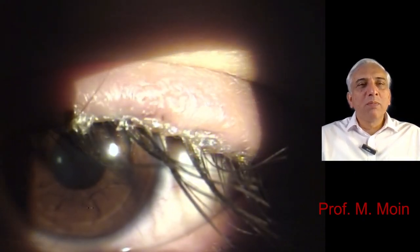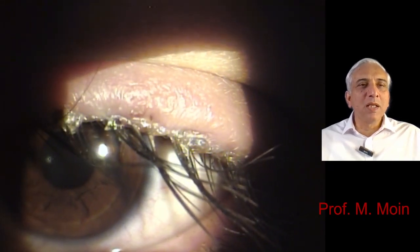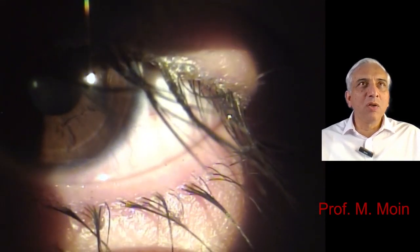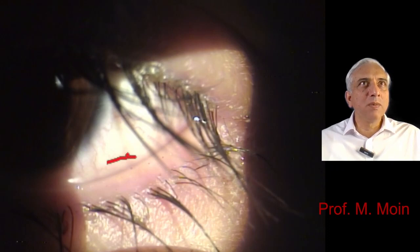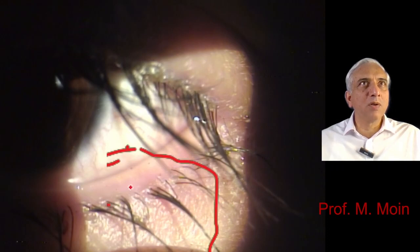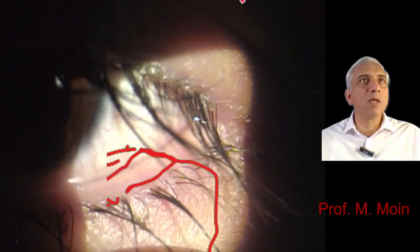In staphylococcal blepharitis, what you would see is associated inflammation of the lid margin as well. So if we look at this lid margin over here, you will see that this lid margin is going to be inflamed. This area seems to be reddish, and this tells you that this patient has got blepharitis involving the lid margin.